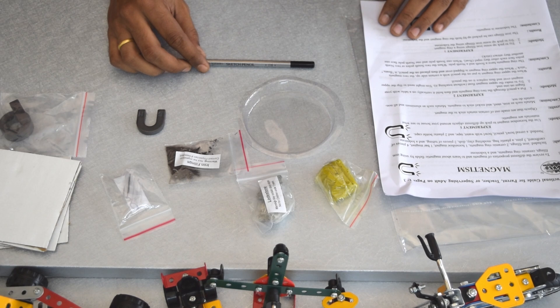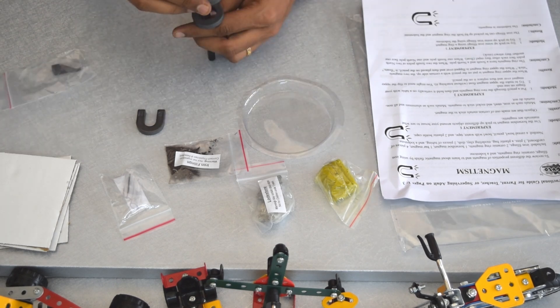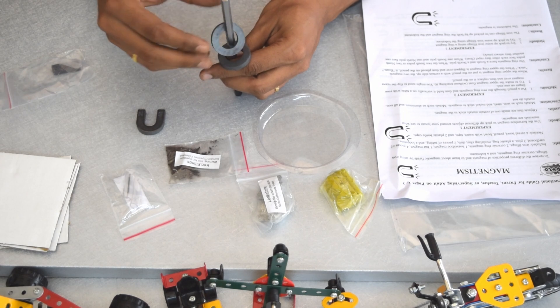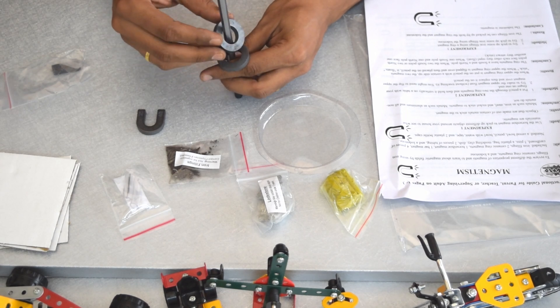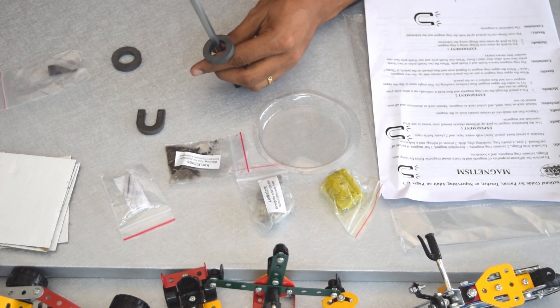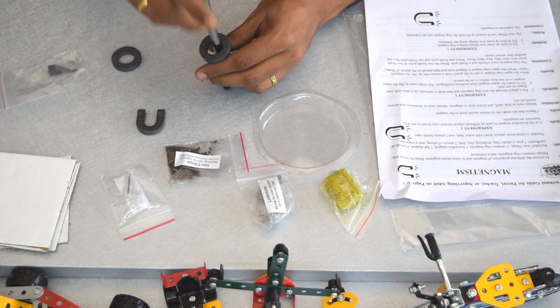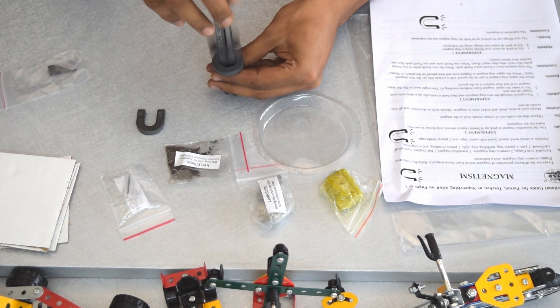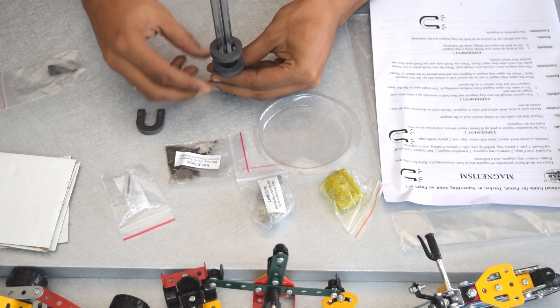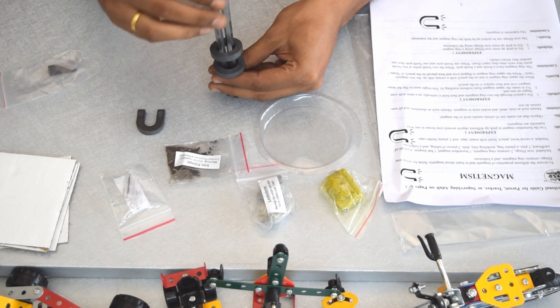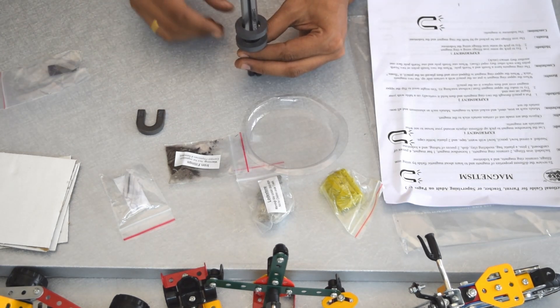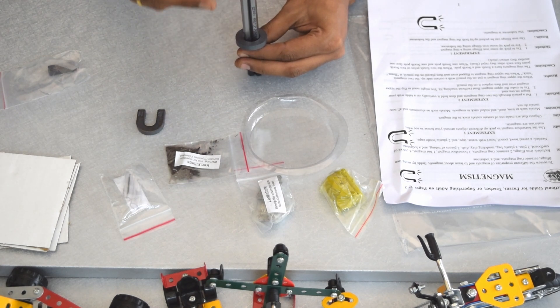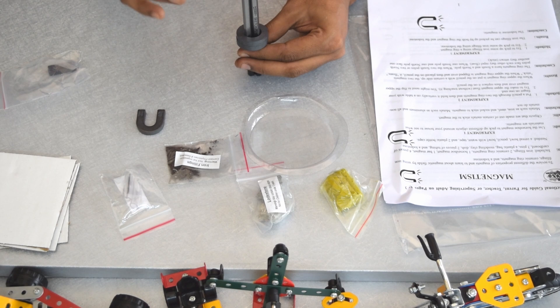Moving on to the second experiment, trying to make the upper magnet float. It does float, but let me use two pencils. Using two pencils does work. What this experiment shows is that like poles repel and opposite poles attract.